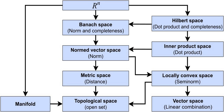More generally, every commutative topological group is also a uniform space. A non-commutative topological group, however, carries two uniform structures — one left-invariant, the other right-invariant.